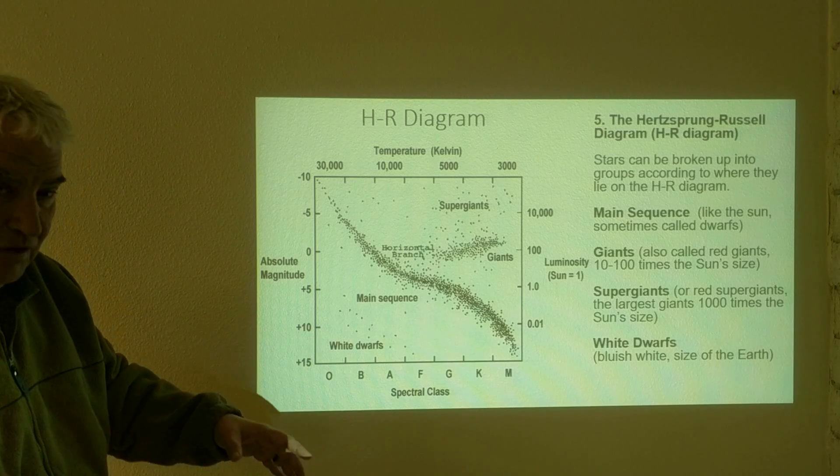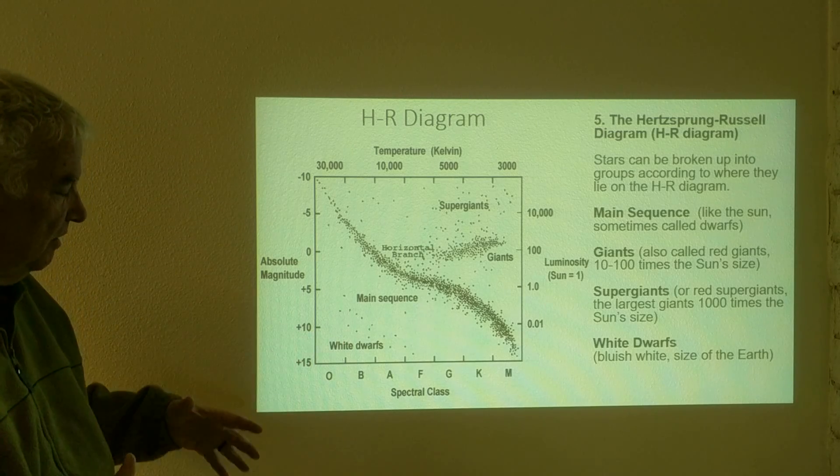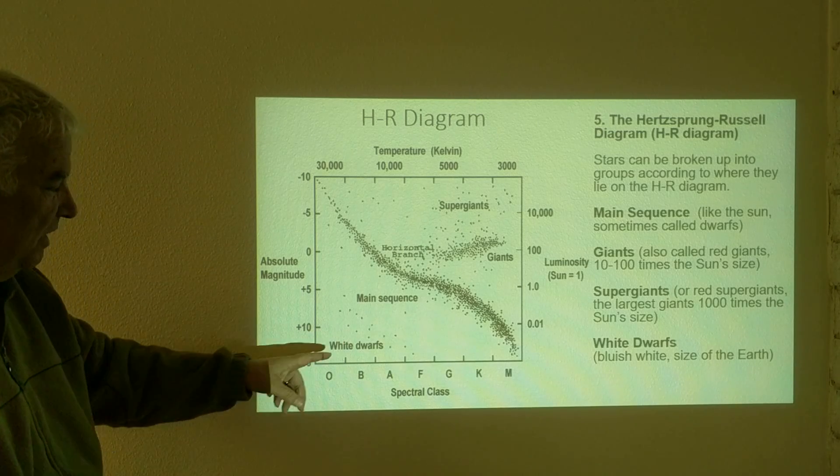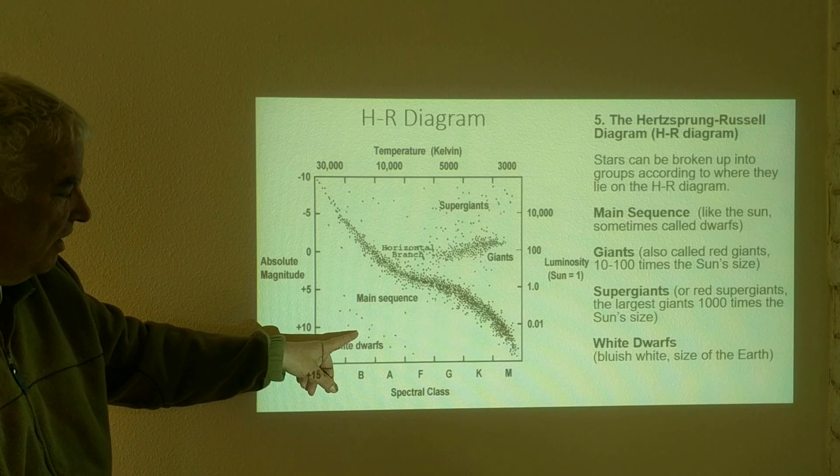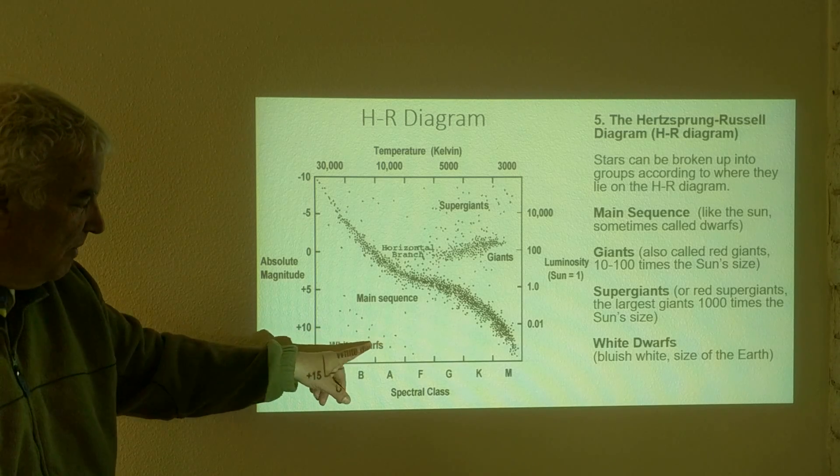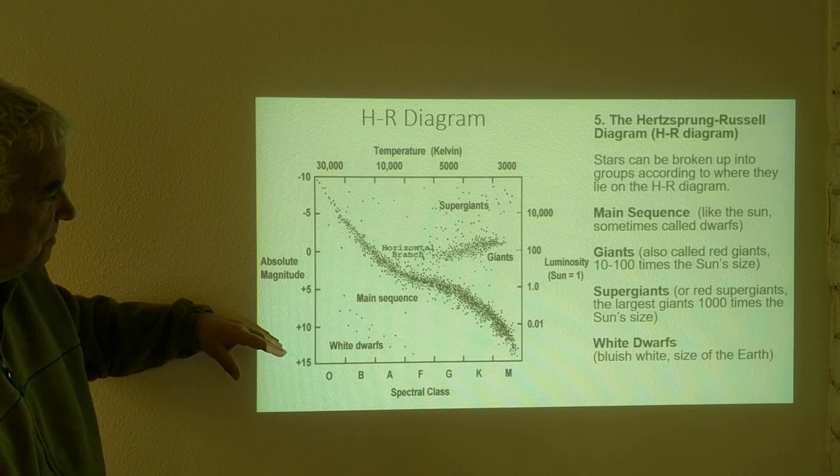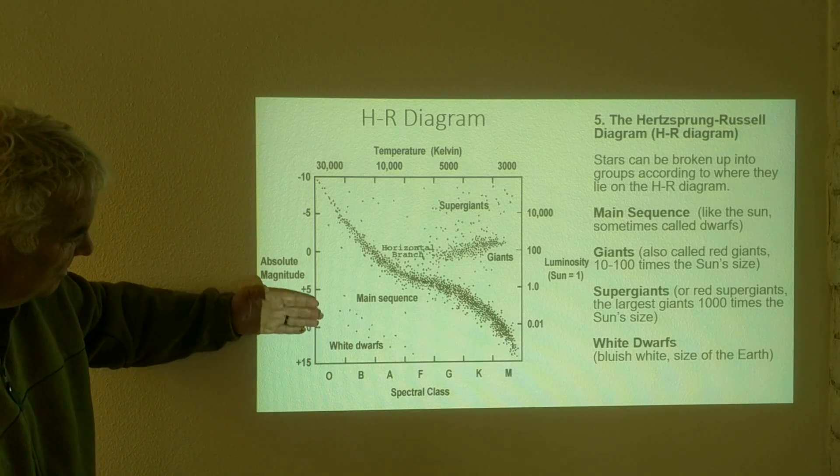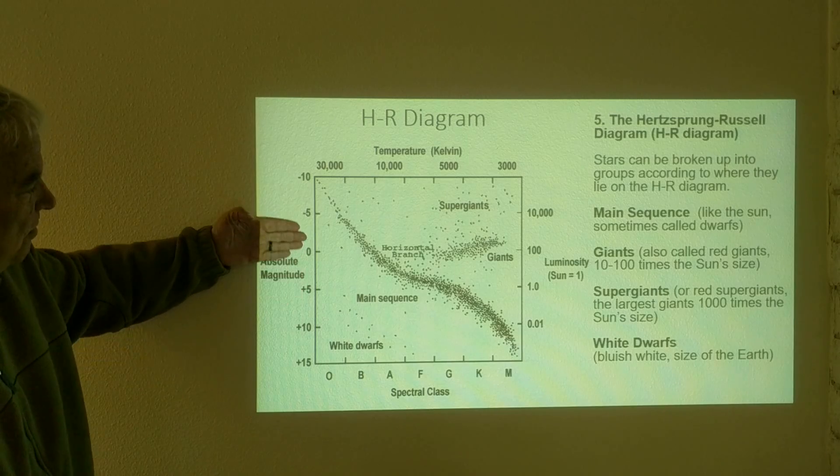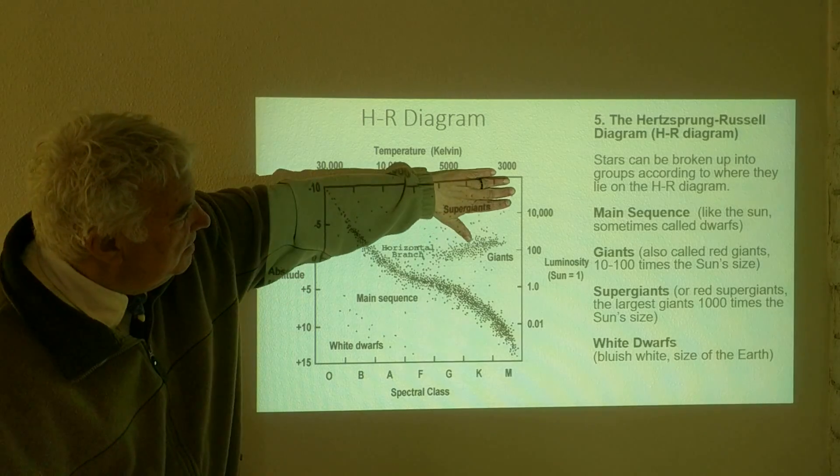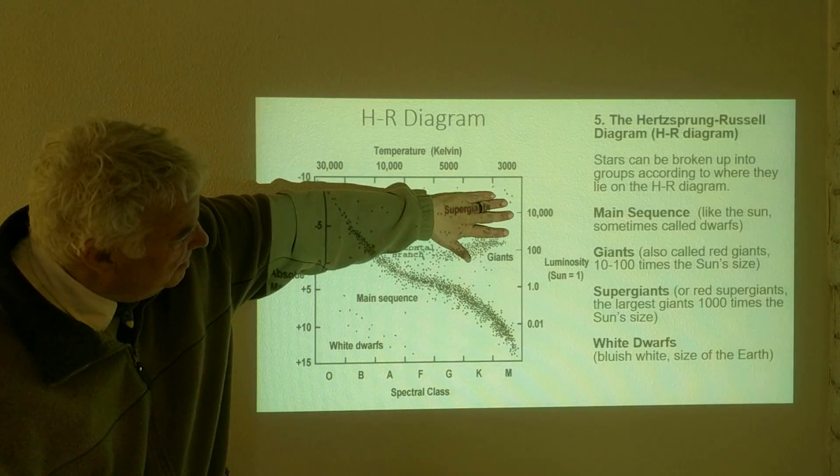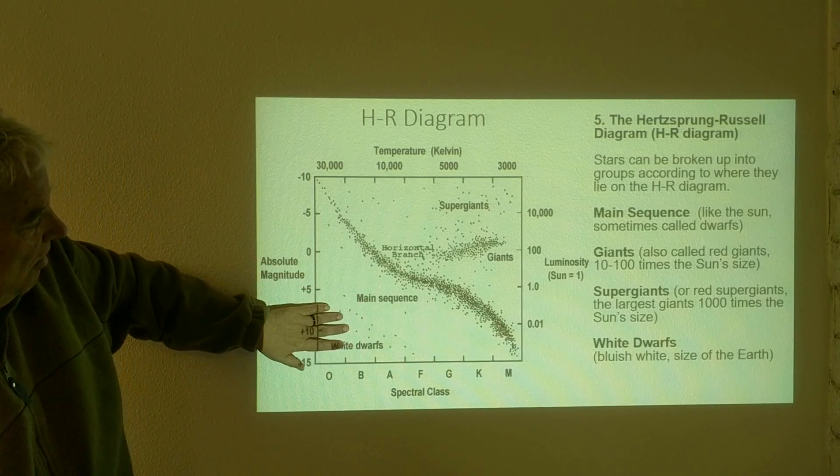even though it's hot, normally hot objects we think of being emitting a lot of light and being very bright, the smallness makes it down here in the diagram so that it is faint. So we can think of the diagram as being faint is down here and bright as the top. So all of these are bright and then all of these are faint.